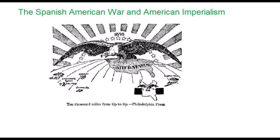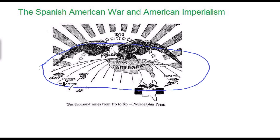Today we're going to focus on why the United States suddenly became interested in acquiring overseas territories at the end of the 19th century. We're going to begin by focusing on America's changing perspective from a continental nation to an intercontinental nation — a nation that wanted to acquire control over vast territory stretching from the Pacific to the Atlantic Ocean.